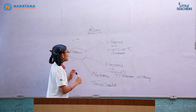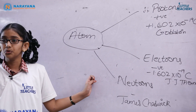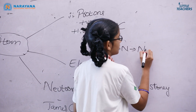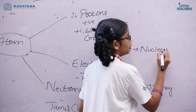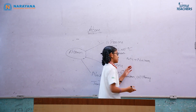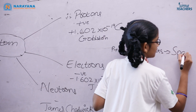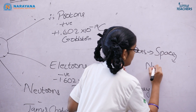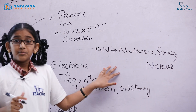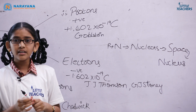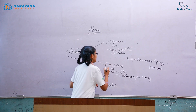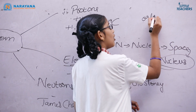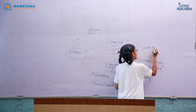Here we get to know something new: protons and neutrons together are known as nucleons. These nucleons occupy some space, which is considered as the nucleus. Around this nucleus we see some imaginary path called orbit or shell, on which electrons revolve around the nucleus.